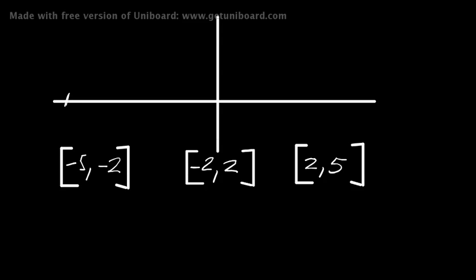Minus 5 to minus 2 ranges from minus 5 on the x-axis to minus 2 on the x-axis. Minus 2 to 2 ranges from minus 2 all the way over to 2 on the x-axis, and then the last one goes from 2 to 5.